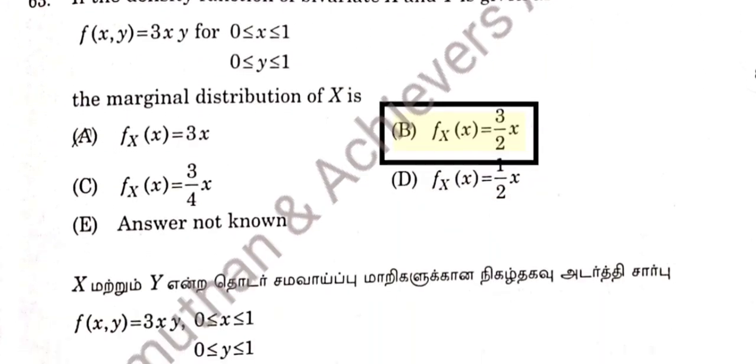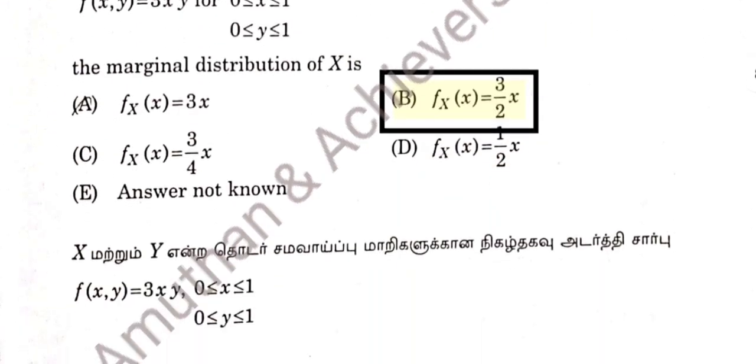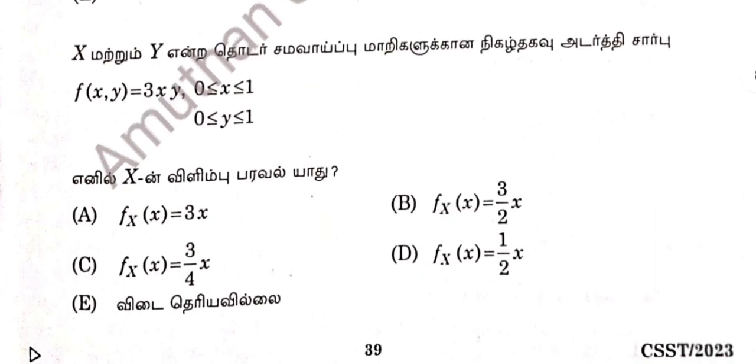Question 63: Over marginal distribution, otherwise option B. The result is 3 by 2 index, Fx of x, 3 by 2 in dy x.